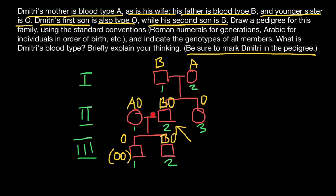We know Dmitri's genotype is B O. His sister is blood group O, and we instantly know her genotype is O O — only one genotype produces blood group O, meaning she got one O allele from the father and one from the mother. So we have drawn the pedigree, marked Dmitri, assigned Roman numerals to each generation and Arabic numerals to each individual, and specified genotypes for each person. That's all for today — subscribe and see you in the next video. Goodbye.